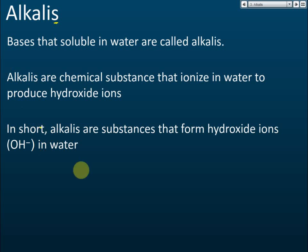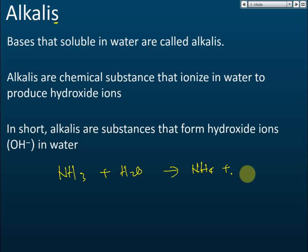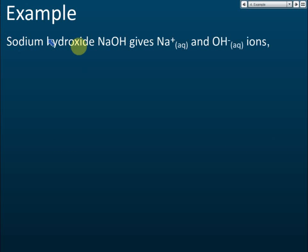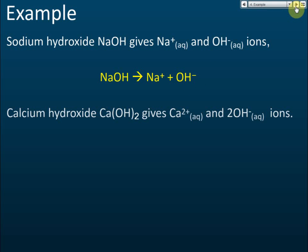For example, ammonia — when dissolved in water — forms ammonium ions and hydroxide ions. Since hydroxide ions are produced, ammonia is an alkali. Similarly, sodium hydroxide dissolved in water forms sodium ions and hydroxide ions, so it is both a base and an alkali. Calcium hydroxide partially dissolves in water to form calcium ions and hydroxide ions, and is therefore also an alkali.